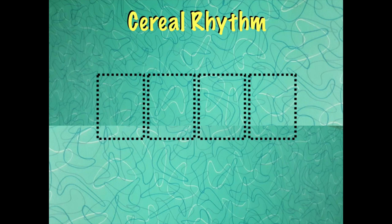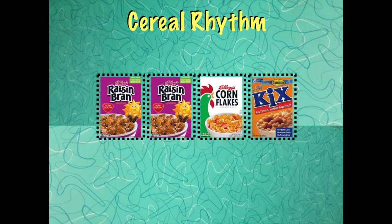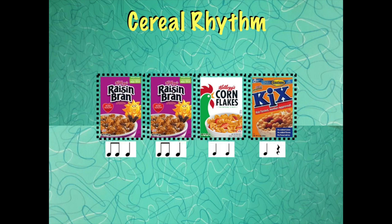So now we are going to pick four different cereals to create a four-part rhythm. Here is our first example. I will say it first, and then you will try it by yourself. Raisin Bran, Raisin Bran, Cornflakes, Kix. And here's what the rhythm looks like written out. Underneath Kix, you might notice there's a note and then a little squiggly. That little squiggly stands for a silent beat. Kix.